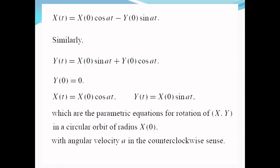If we choose the axis so that Y(0) = 0, then from these two equations, X(t) = X(0)cos(at) because Y(0) = 0, and second, Y(t) = X(0)sin(at). Here also Y(0) = 0.